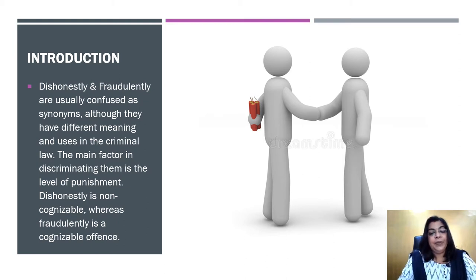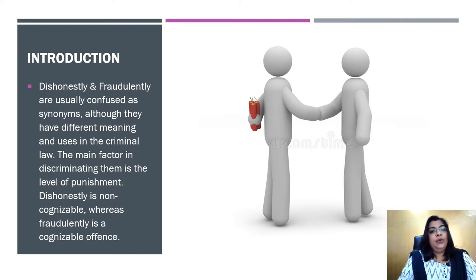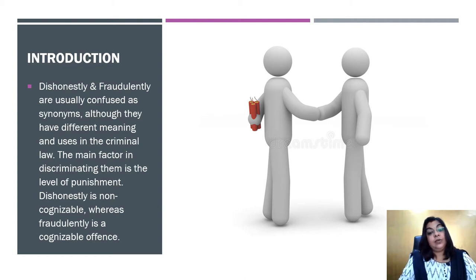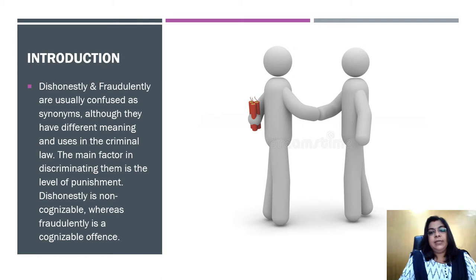For a common person or if you are watching my video for the first time, let me tell you: non-cognizable is not a serious offense, whereas cognizable is a serious offense. In non-cognizable, the punishment is not very high, and in cognizable, the punishment is severe. So dishonestly is non-cognizable where the punishment is less, and fraudulently is cognizable where punishment is more. This makes a key difference between dishonestly and fraudulently.